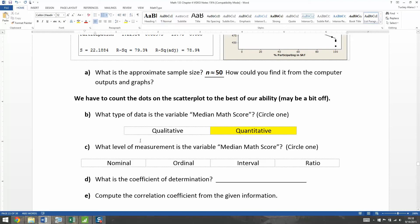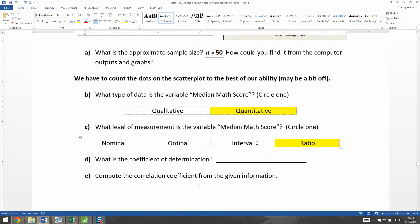Now level of measurement, however, we definitely can do. And that would be ratio, right? Because the lowest you could ever have is zero for any one of these. You can't have a negative math score, right? Negative is what it would take to be interval. And of course, since it's quantitative, it's likely not ordinal and it's definitely not nominal.